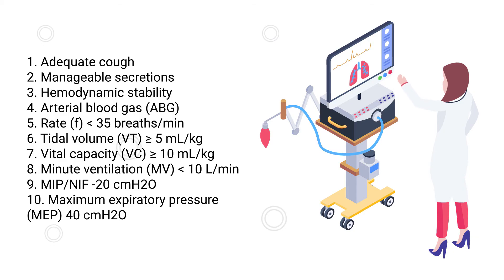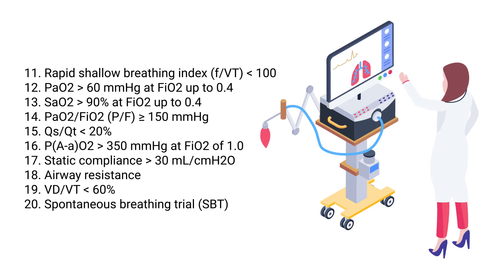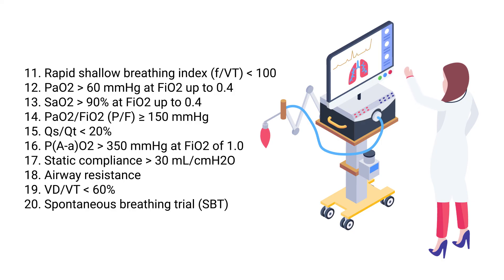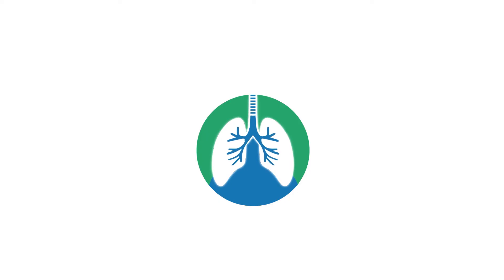Further criteria include vital capacity, minute ventilation, maximum inspiratory pressure (negative inspiratory force), maximum expiratory pressure, rapid shallow breathing index, acceptable oxygenation, PF ratio, shunting, alveolar-to-arterial oxygen gradient, static compliance, airway resistance, dead space-to-tidal volume ratio, and the patient must pass the spontaneous breathing trial. If the patient meets these criteria, then extubation can be considered, which involves removing the endotracheal tube from the patient's airway.